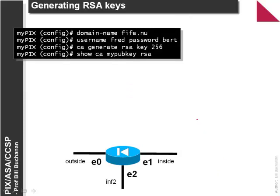To generate RSA keys — which we need if we're using VPN or IPsec — we use the command 'CA generate RSA key' for 256-bit keys. Before doing this we must set the domain name of the device and typically set a user.